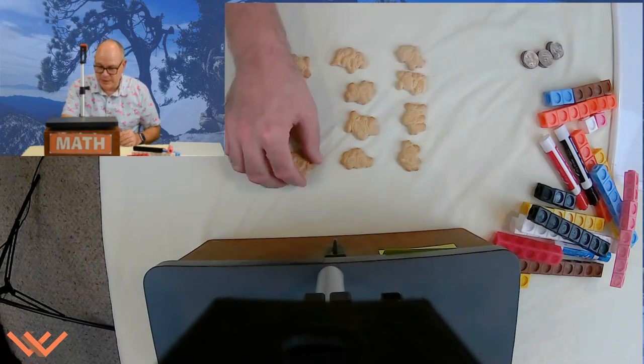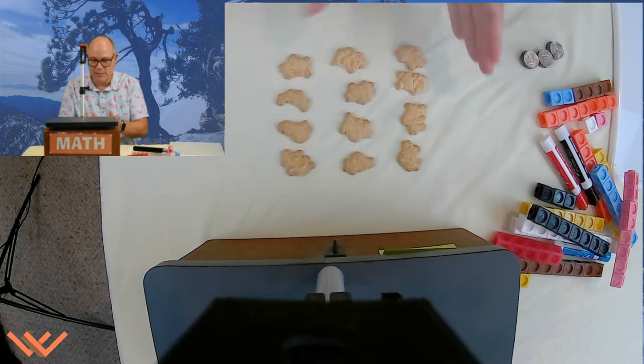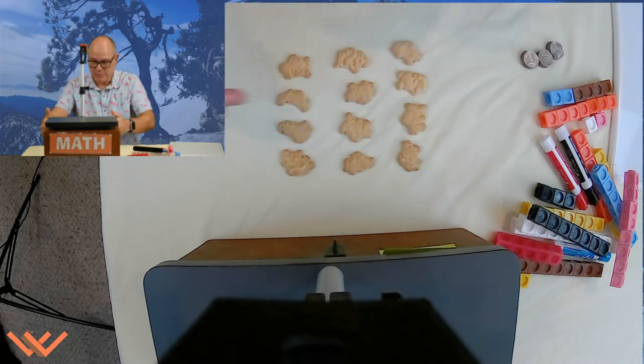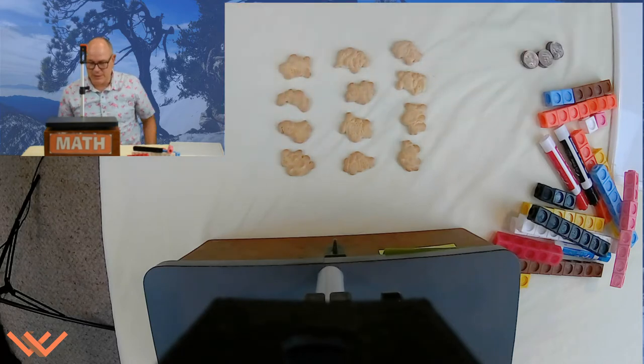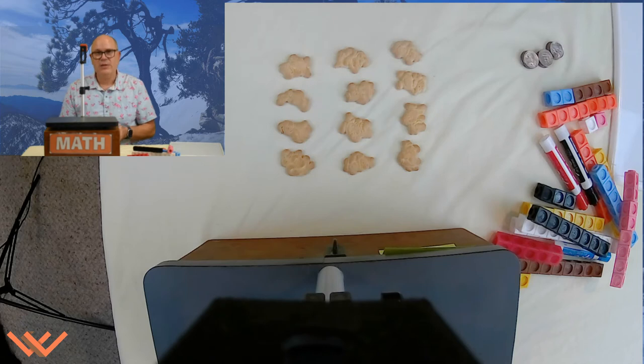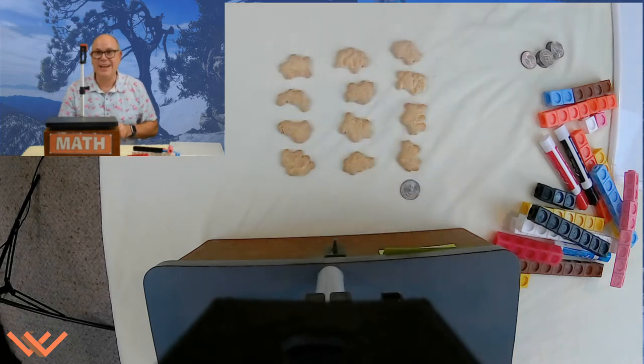So notice how I arrange them. I try to make it so that they're equidistant apart and kind of make a matrix or an array, just something here where I can kind of get a feel for it. Now, if we're looking at four pieces here, sometimes you know that you have your fives. I don't have any more animal crackers, so I'm going to use a different type of manipulative. Let's just use a coin.